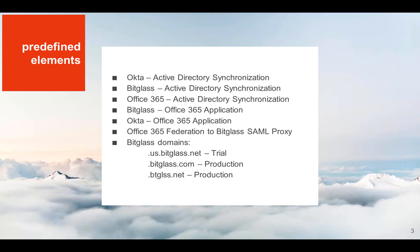There are a few things that were configured ahead of time that are of notable mention. To eliminate the need to configure user accounts in Bitglass, Okta, and Office 365, I installed and configured synchronization agents for each. I also added Office 365 as an application in both Bitglass and in Okta. And lastly, I used PowerShell to configure my Office 365 tenant to point to Bitglass for SAML authentication.